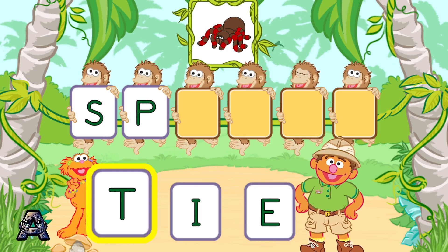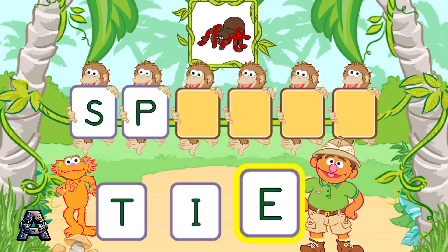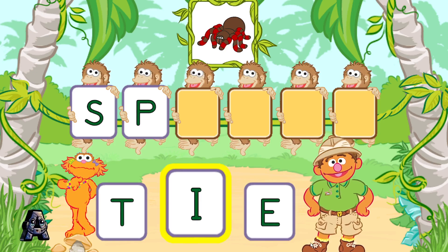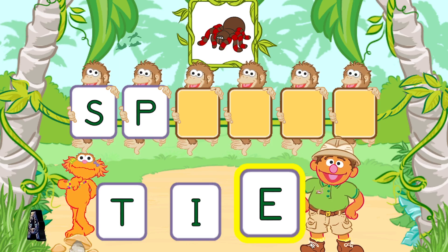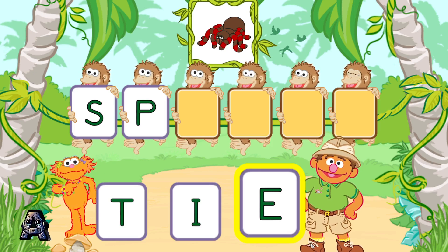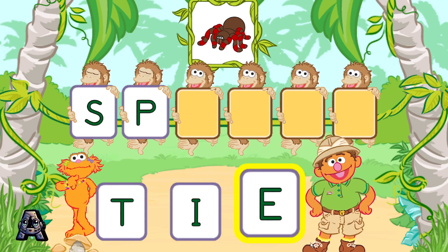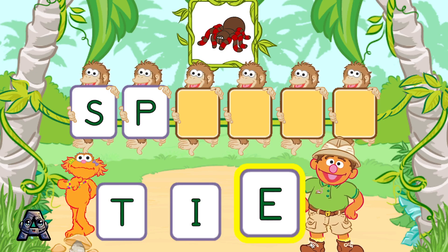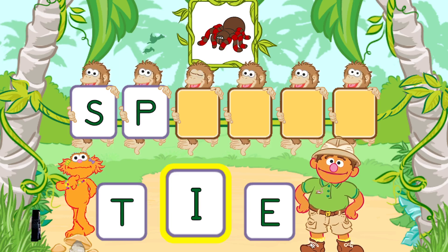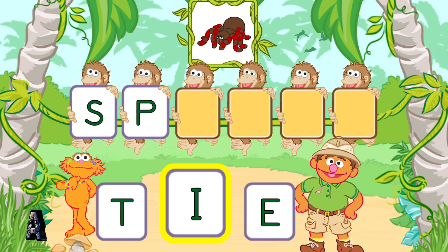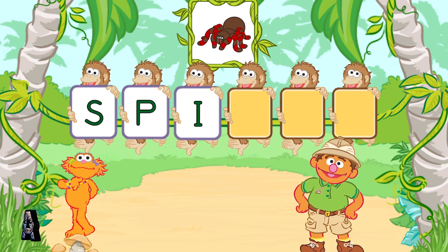Next, pick the letter I. To pick a letter, tilt your Wii Remote back and forth and then jump. E is not the next letter in the word spider. Give it another try. Pick the letter I. Tilt your Wii Remote back and forth and then jump. You are so cool! I is the next letter in the word spider.